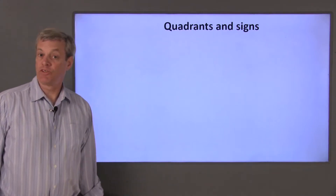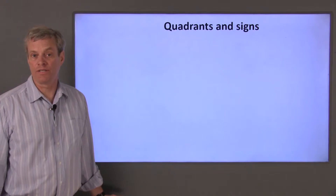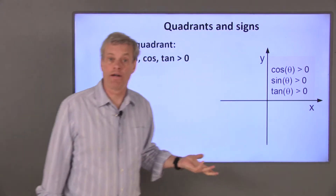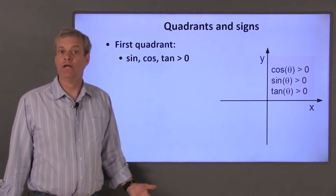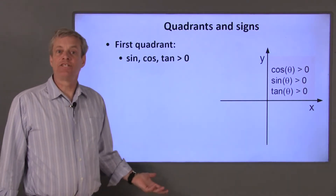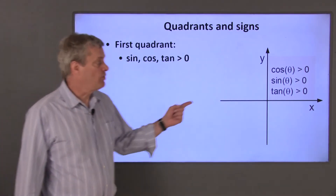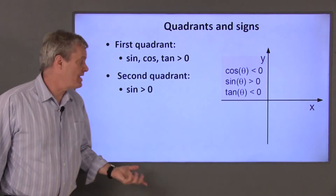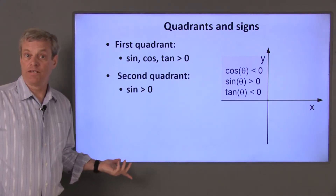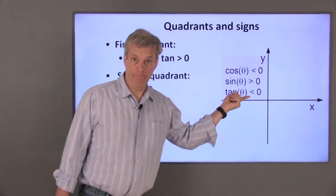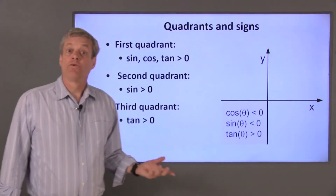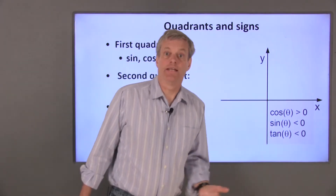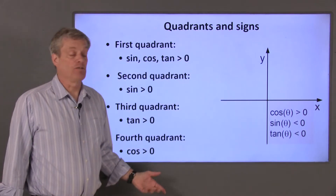Now let's generalize what we'd expect the signs of the trigonometric functions to be in the different quadrants of a rectangular coordinate system. In the first quadrant, both the x and y values are positive, so the sine and the cosine functions will both be positive. Since the tangent is y divided by x, and both x and y are positive, tangent will also be positive in this quadrant. In the second quadrant, x is negative and y is positive, so the cosine is negative and the sine is positive. The tangent is the ratio of a positive to a negative number, so the tangent will be negative in this quadrant. In the third quadrant, both the sine and the cosine are negative, but the ratio of two negative numbers is positive, so the tangent will be positive. In the fourth quadrant, x is positive and y is negative, so the cosine is positive, the sine is negative, and tangent will be a negative number.